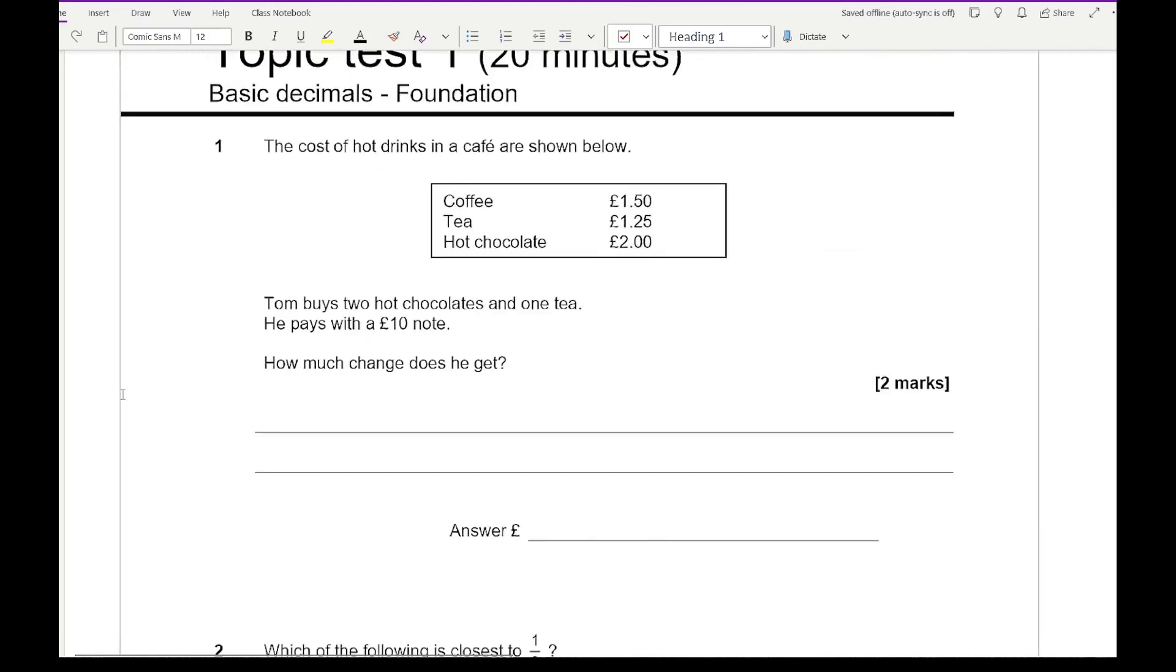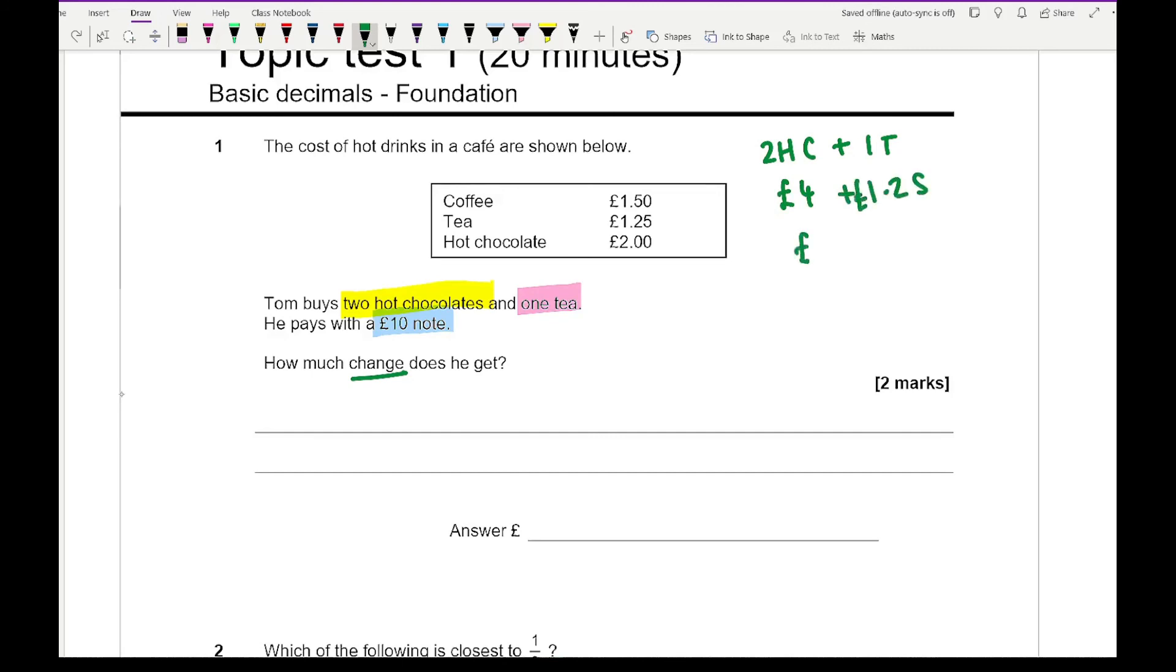For question one, the cost of hot drinks in a cafe are shown. Tom buys two hot chocolates and one tea. He pays with a £10 note. How much change does he get? Let's highlight the important bits. Two hot chocolates, that's going to be £4 for two, and a tea costs £1.25, so all in all that's £5.25. Now we need to take that away from 10.